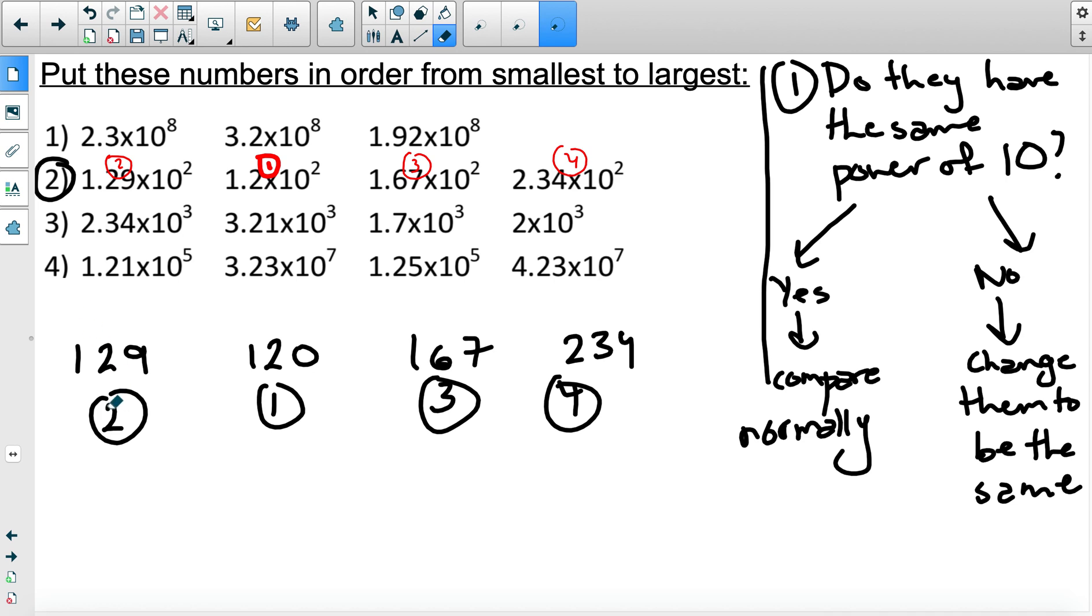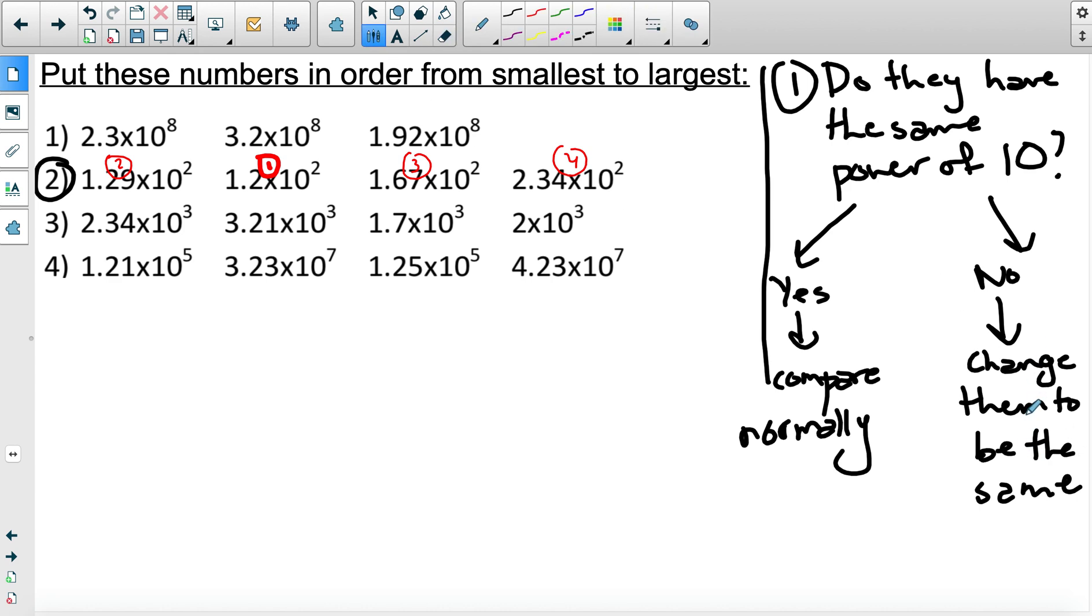I'm going to go to part four, which as you notice has different powers. Now, I can change them to be the same, but I can also use a trick. And again, this stems from the fact that I understand the basics of standard form. So you've converted between different standard forms, you've changed them to normal numbers, you've written them in standard form so you understand how they should look like. So I can easily see 1.21 times 10 to the power of 5 will be much smaller than a number being multiplied by 10 to the power of 7.